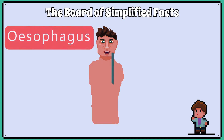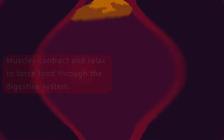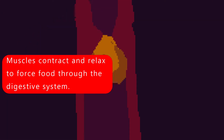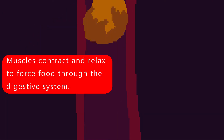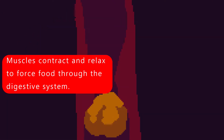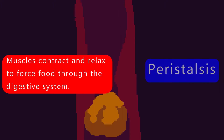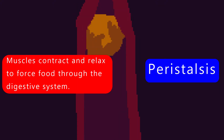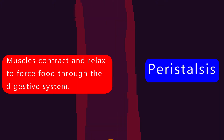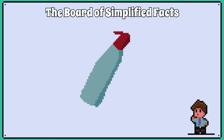The food is then swallowed and travels down the esophagus. The esophagus has muscles which contract behind the food and relax ahead of it. This forces food down the esophagus in a process called peristalsis, which happens throughout the digestive system. I like to imagine it like squeezing toothpaste out of a tube.